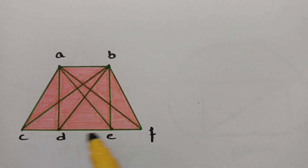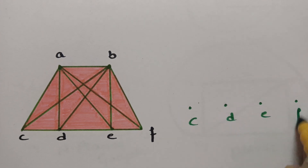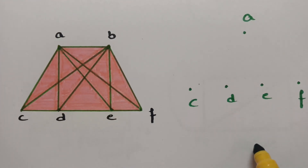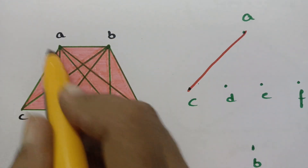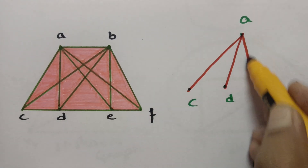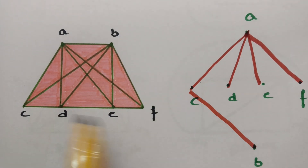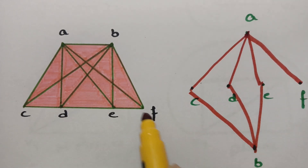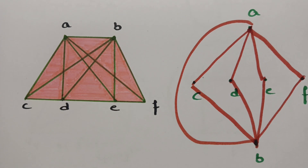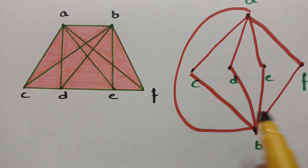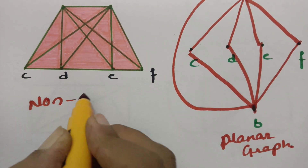In this complete bipartite graph, vertices A and B are each connected with all four vertices of set 2: C, D, E, and F. Let me check whether it can be drawn without edge crossing. Drawing: A connected to C, D, E, F; B connected to C, D, E, F; and A connected to B. There are no edge crossings here, so this is a planar graph.